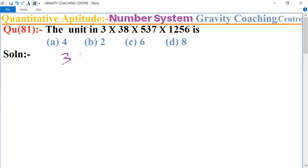3 × 38 × 537 × 1256. So first we multiply the units digit 3 and the units digit in 38: 3 × 8 equals